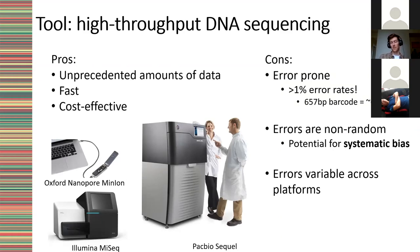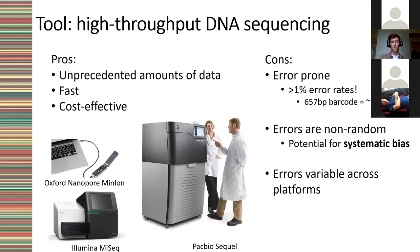Sequencers are error prone — as a huge overgeneralization, we can expect greater than 1% error rates. With our 657 base pair CO1 barcode, on any given output we might be getting six and a half errors. Additionally, these errors are non-random, so there's potential for systematic bias. For example, the PacBio SEQUEL platform introduces large numbers of indel errors, while the Illumina iSeq is more prone to substitution errors. If these errors are repeated, they might be interpreted as biological signal when they're just sequencing noise, and since errors vary across platforms it's not a one-size-fits-all solution.